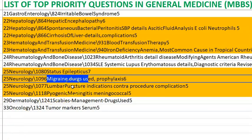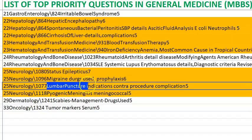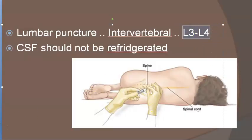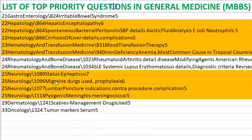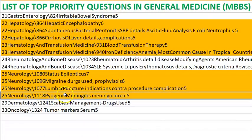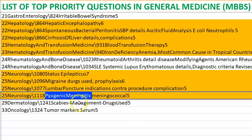Lumbar puncture is done at L3–L4. Know when you should and should not do a lumbar puncture — very important. Pyogenic meningitis: know the organisms by age group — Listeria, Haemophilus, and Streptococcus can affect all ages. Neisseria meningitidis is also important.